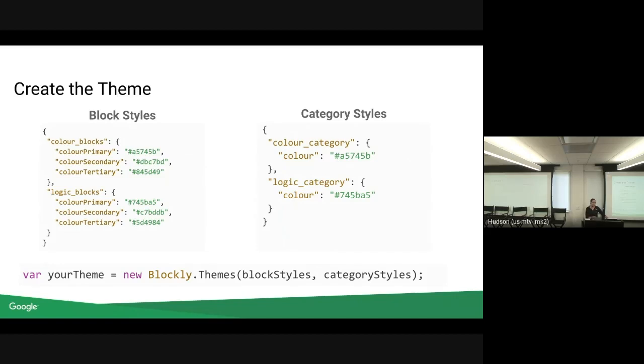Color primary is the color of the block, color secondary is the color if it's a shadow block, and color tertiary is the color if it's for the border. For category styles, you just have the category style name and then the color, what color we want that to be.